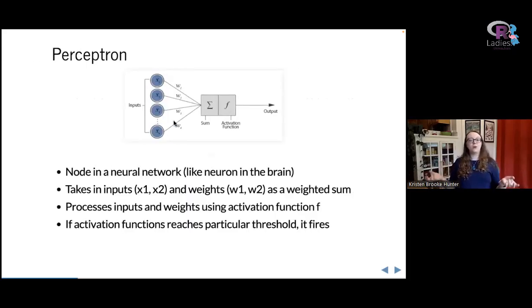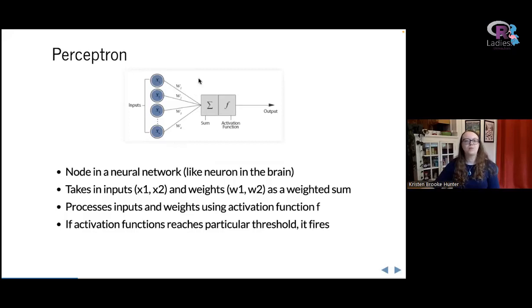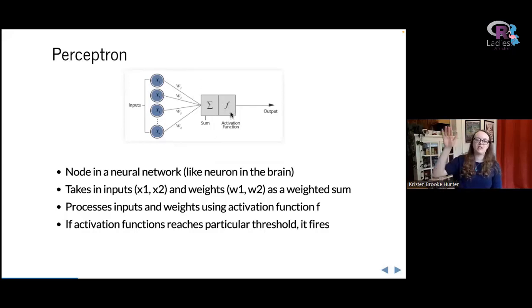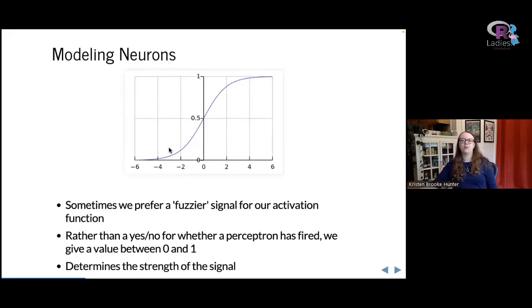A perceptron is a single node in a neural network — the mathematical version of a single neuron in your brain. A perceptron takes all your inputs (information like favorite color, income, where you live, etc.), applies a bunch of weights to them — maybe income is weighted more highly than favorite color — sums them all together, puts them into the activation function like a step function, and gives you an output. If the sum hits the needed threshold, the perceptron fires.